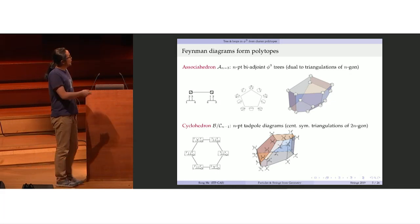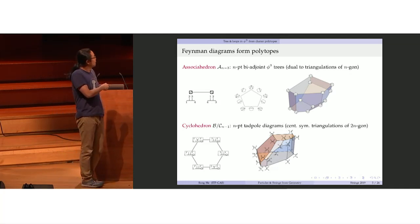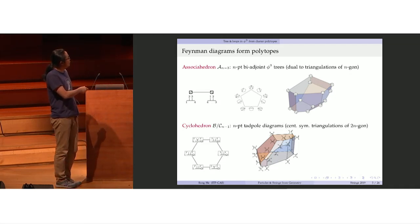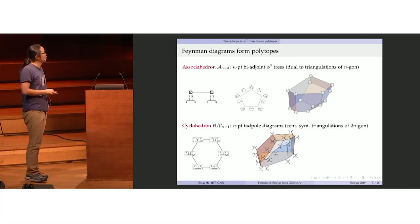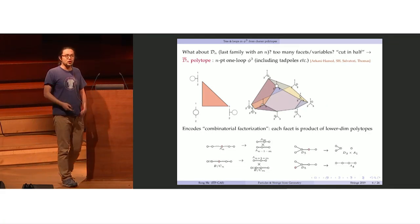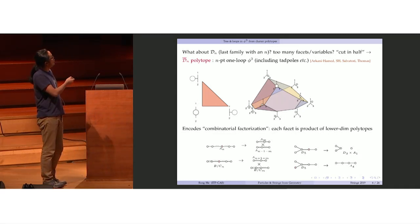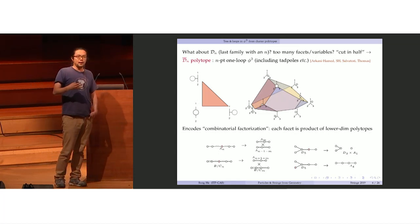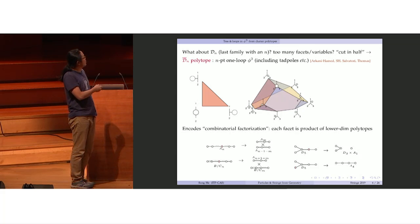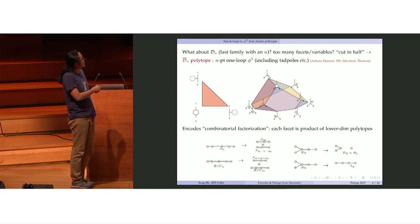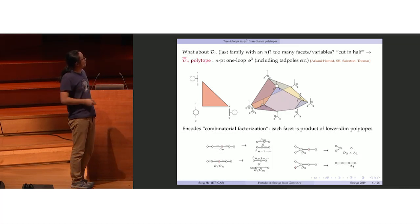All the planar tadpole diagrams at one-loop level also form a polytope — the cyclohedron, which is of type B or C. For three-point and four-point, they form two-dimensional and three-dimensional cyclohedrons. So we've seen the appearance of cluster polytopes of type A, B, and C. For type D, the last family with subscript N, we see that they encode all the one-loop phi-cube planar diagrams — including tadpoles. However, there are almost twice as many vertices, so you need to cut it in half and define this D_N-bar polytope, where exactly every vertex corresponds to one one-loop planar Feynman diagram.